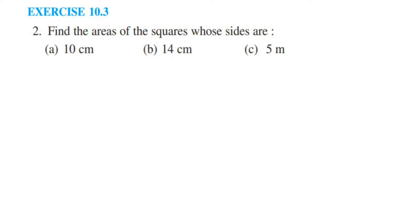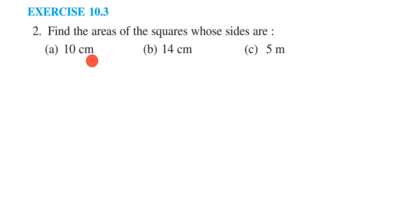Hey everyone, here is exercise 10.3, second question. The chapter is Mensuration of Class 6. The question is: find the area of squares whose sides are given. We have three different sides — first one is 10 centimeters, second is 14 centimeters, and third one is 5 meters. Let's find out the area.